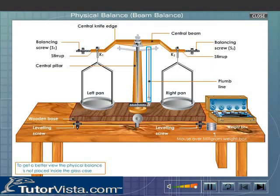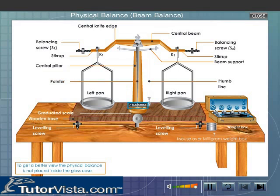A plumb line which is used to set the balance in the horizontal plane is suspended from the beam support. A pointer is fixed in vertically downward direction. The pointer moves over a graduated scale attached to the central pillar.